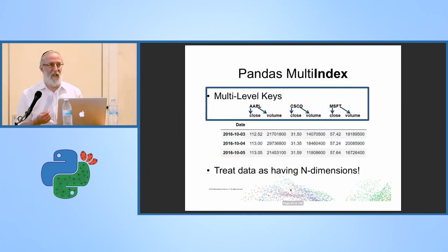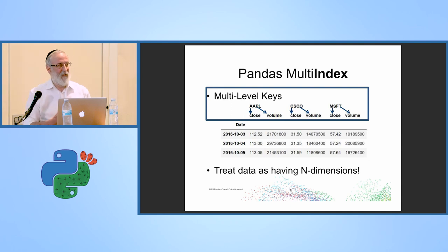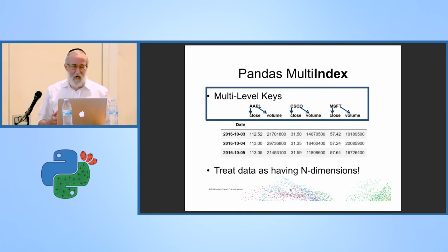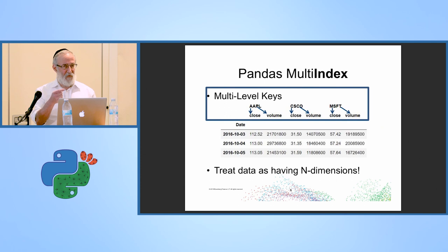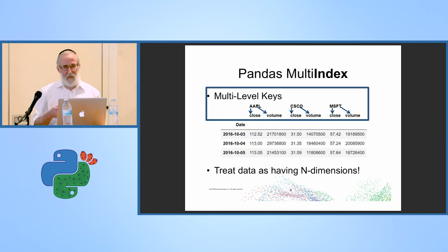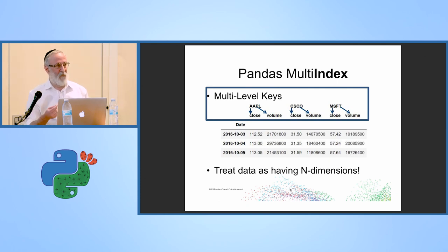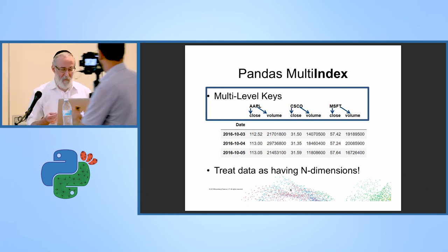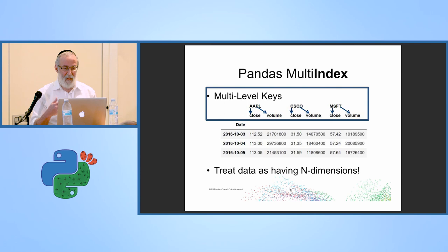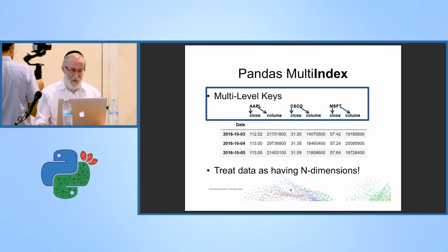A multi-index gives you multiple levels of indices. You have a level-zero index whose keys point to a level-one index. In this case we actually have three dimensions because we have two indices on the columns and one index on the vertical axis. You can have as many levels as you want, so you can express in two dimensions as many dimensions as you need.